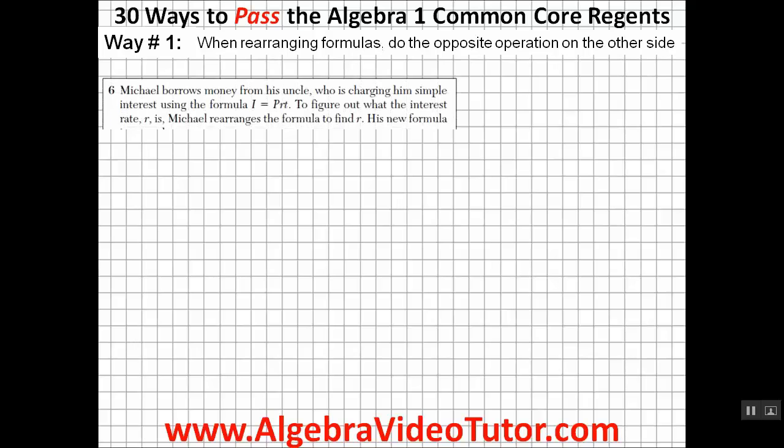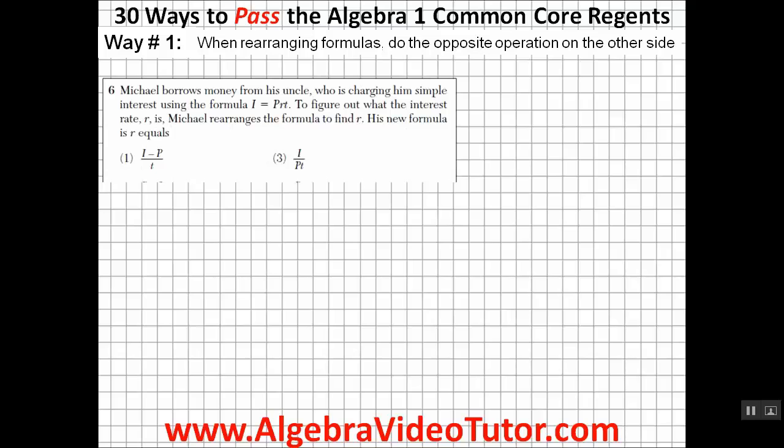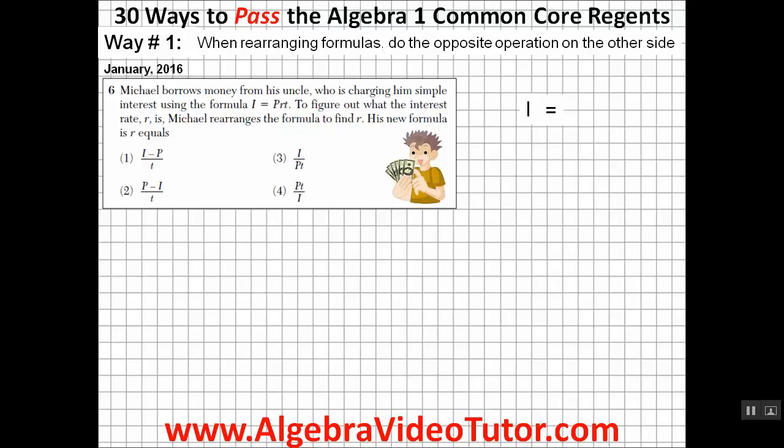To see what this means, let's look at the following question from the January 2016 Algebra I Regents. Michael borrows money from his uncle who is charging him simple interest using the formula I equals PRT. Michael is then asked to rearrange the formula to solve for R. Since R is being multiplied by P and T in the current formula, we'll need to divide I by P and T on the other side to get R by itself.